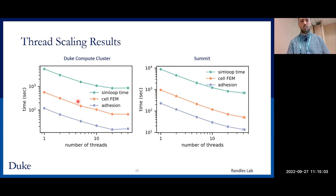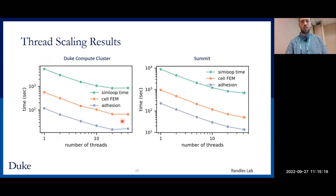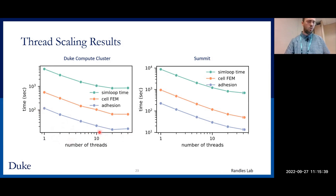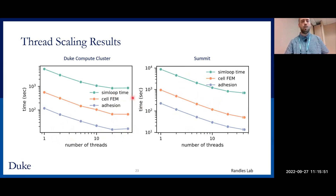These are the thread scaling results on a single node: on the left for the Duke Compute Cluster, on the right for Summit. There are three lines: the top line is overall simulation loop time, the middle orange line is the finite element method, and the bottom line is time due to adhesion routines. On the DCC simulating up to 40 threads, we achieved about an order of magnitude decrease in simulation time, with a similar story on Summit. At high thread counts, performance flattens out slightly on the DCC relative to Summit, which we believe is due to bandwidth limitations on the DCC.